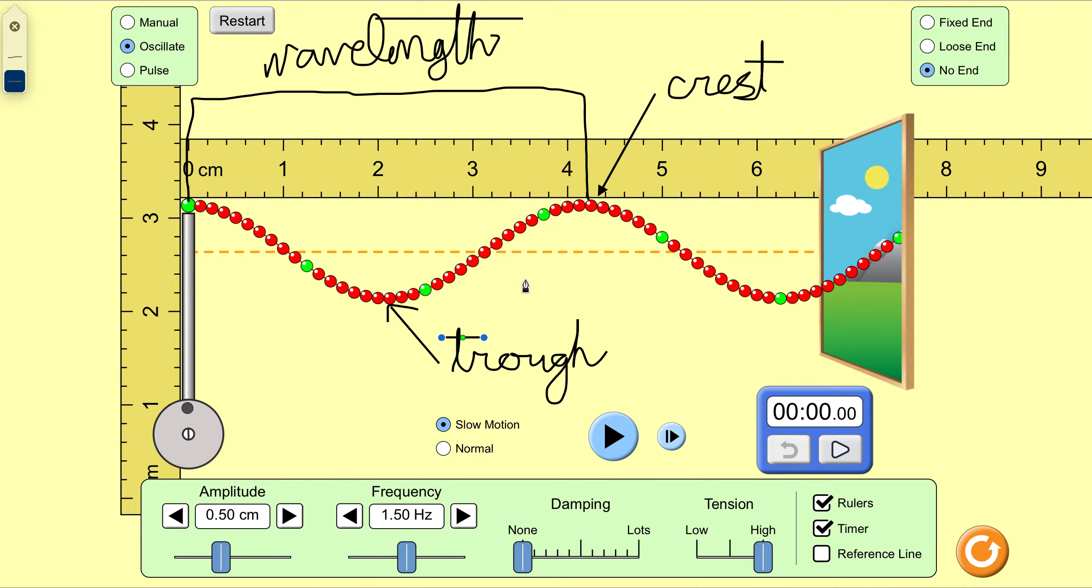Another word we use is amplitude. That describes how tall the wave is. Now notice, I should have moved my ruler up. This ruler at about 2.6. We got 0.2, 0.4, 0.6. That doesn't seem quite right.